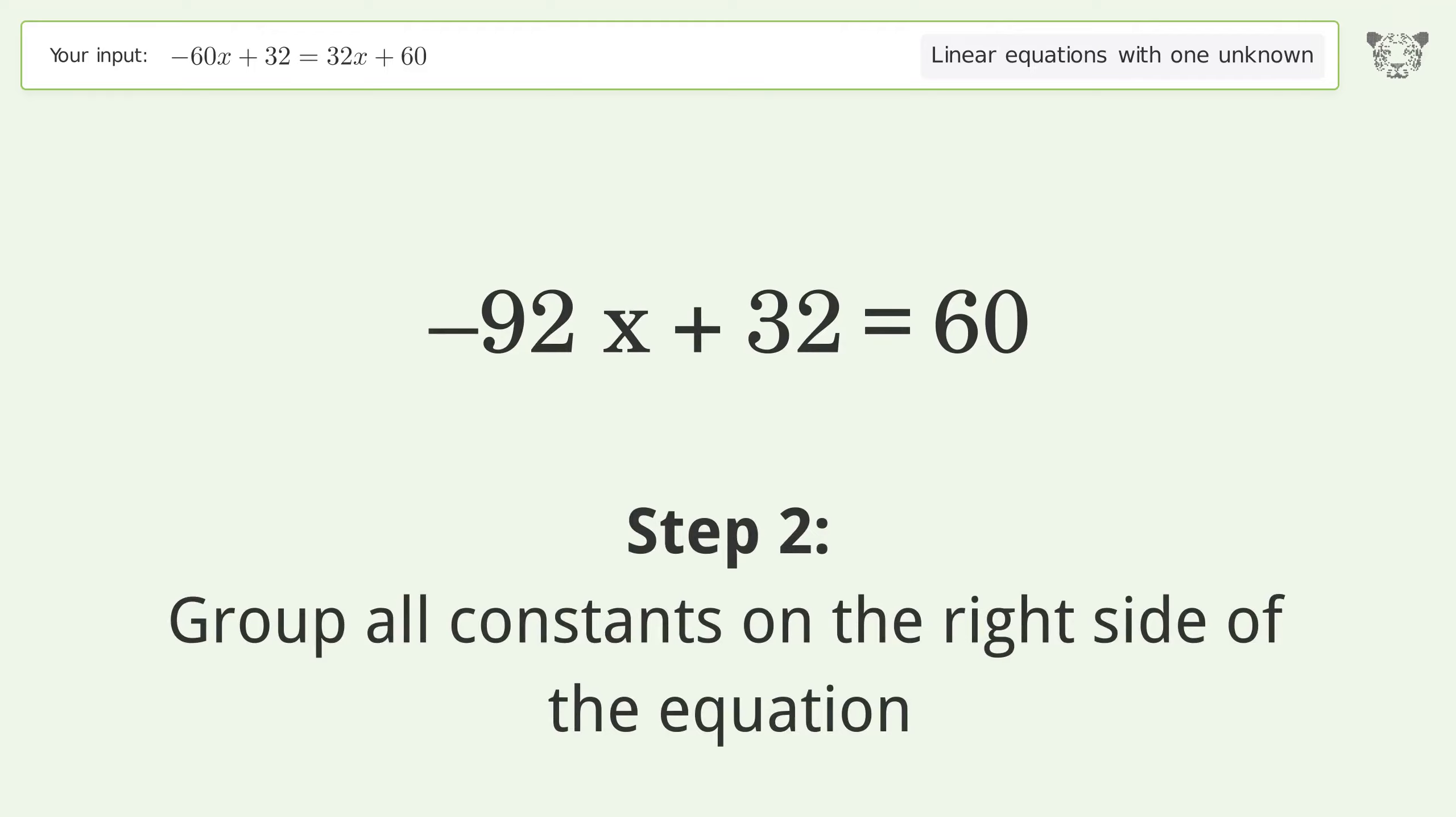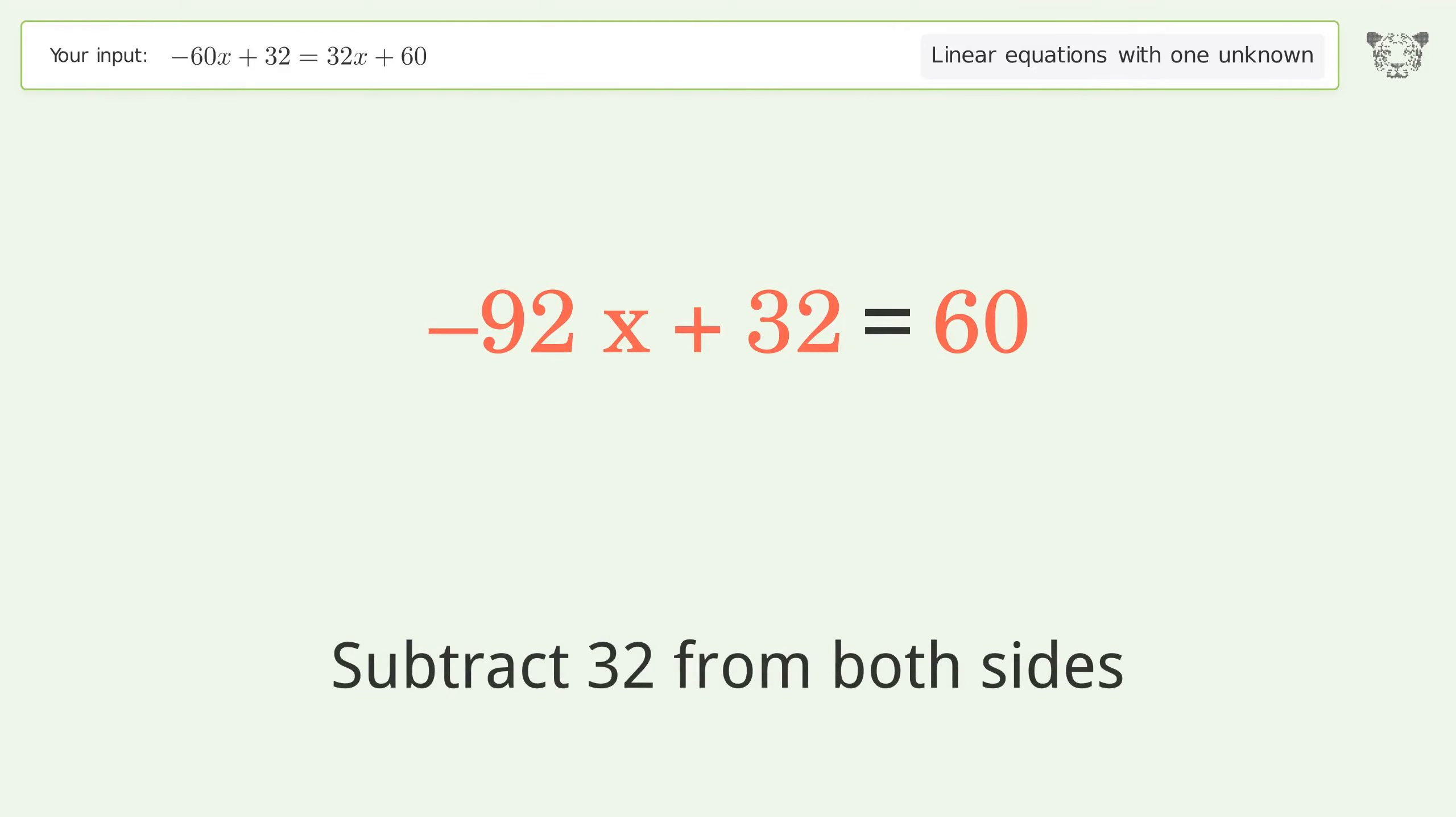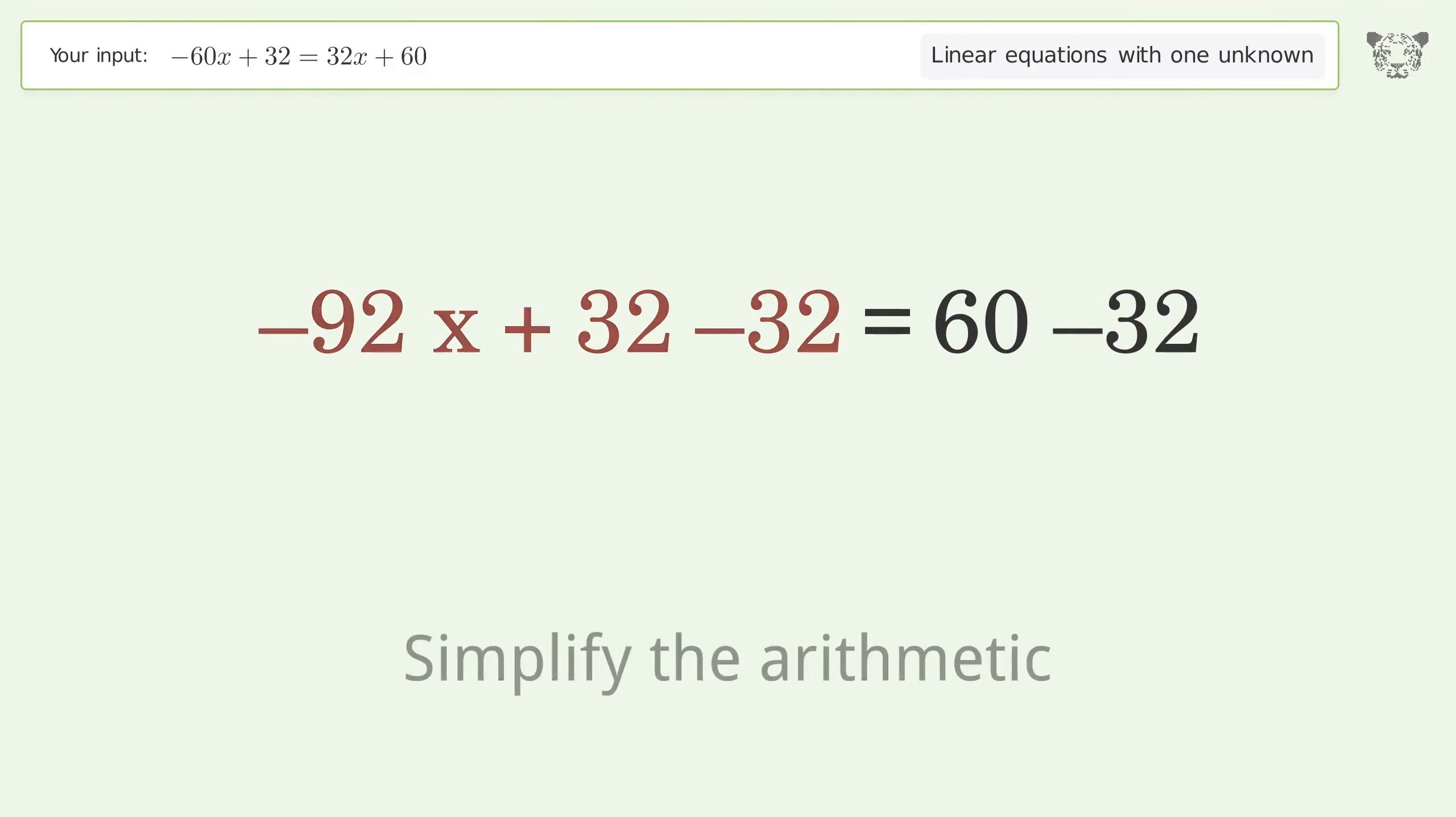Group all constants on the right side of the equation. Subtract 32 from both sides. Simplify the arithmetic.